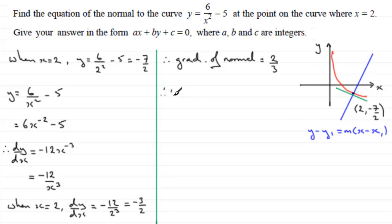So we can say therefore equation of normal, we'll say is, and it's going to be y minus y1. Y1, the y-coordinate is minus 7 over 2. And this equals the gradient m, which we've seen is 2 thirds, multiplied by x minus x1. X1 is the x-coordinate there, 2.